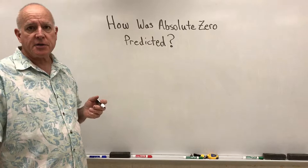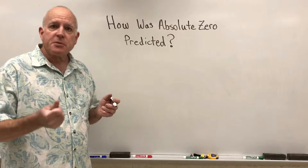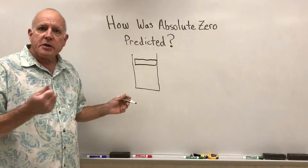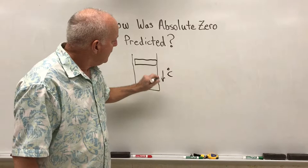A fellow by the name of Jacques Charles, a French scientist, did an experiment. In this experiment he put some gas into a cylinder, and what he found was that for every degree of centigrade that the temperature dropped, the volume dropped too.